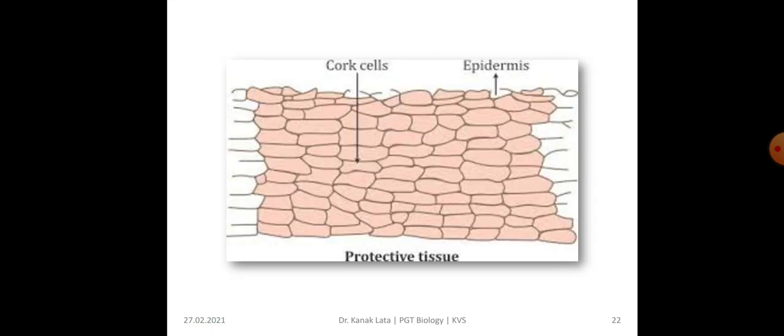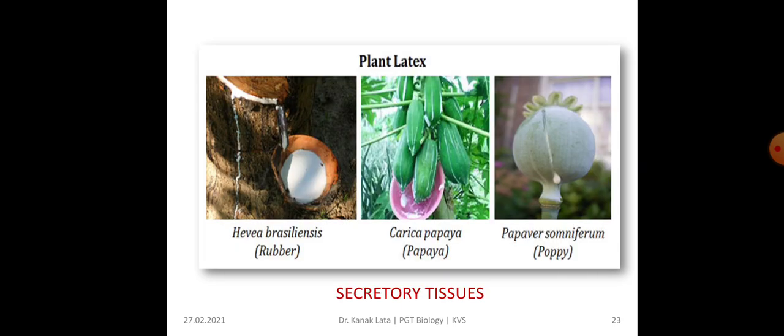Here you can see the protective tissues — epidermis and cork cell. And these are the secretory tissues of the plant that secrete some substances, such as plant latex — rubber from papaya and poppy.